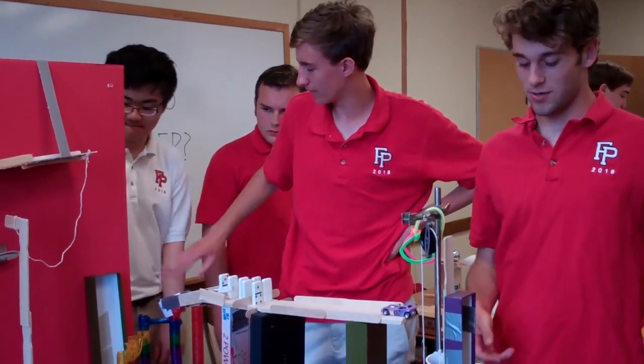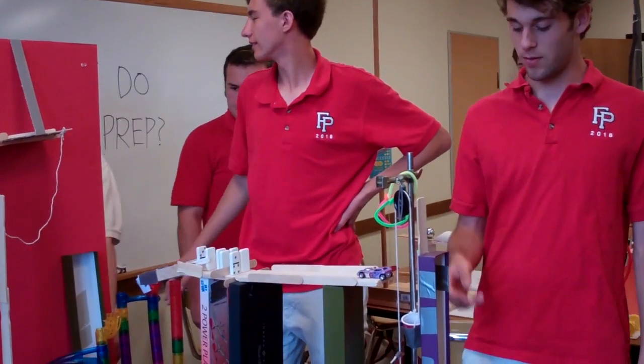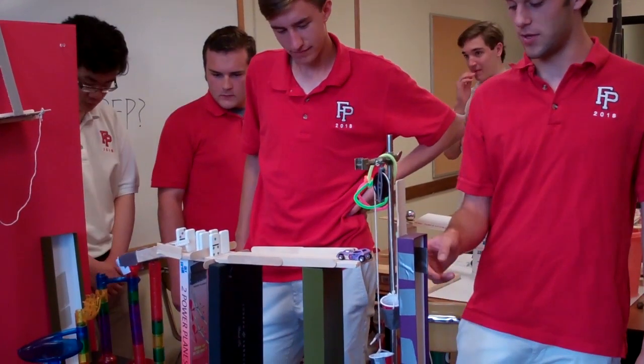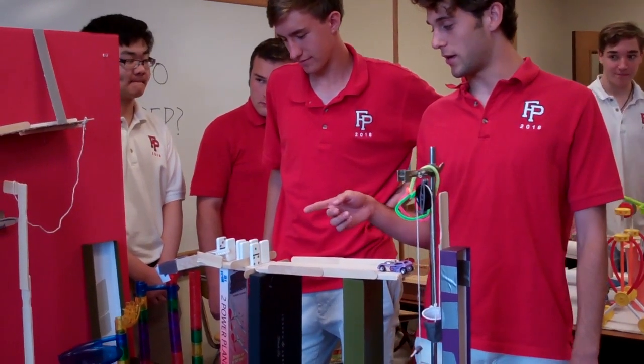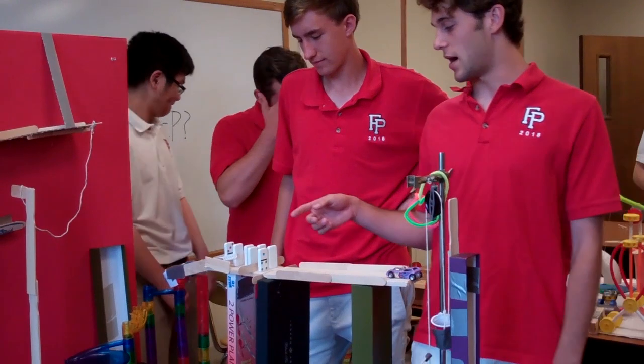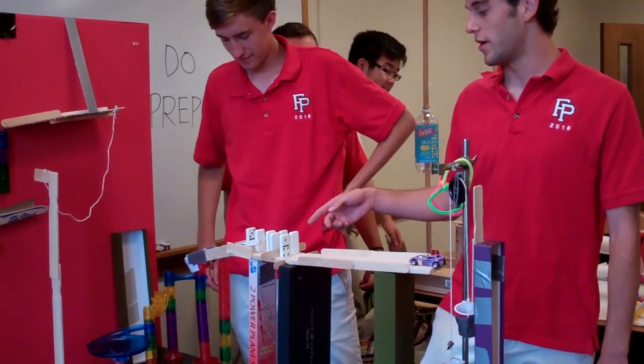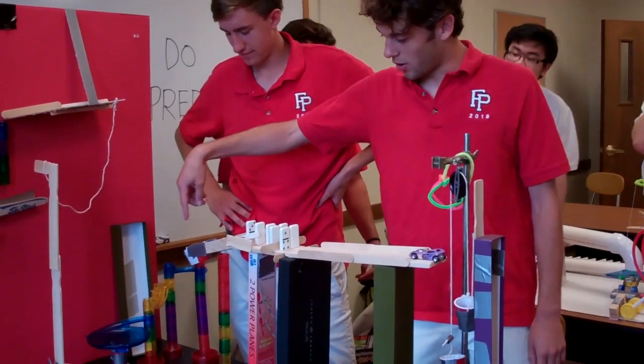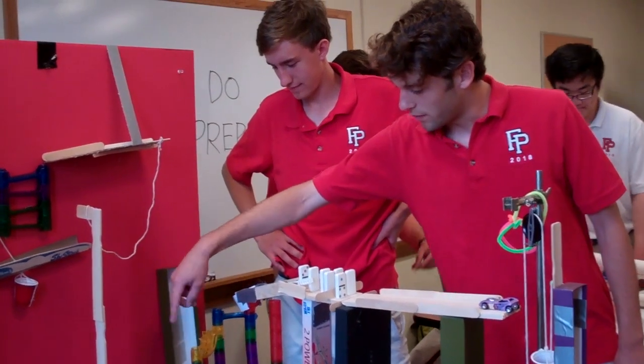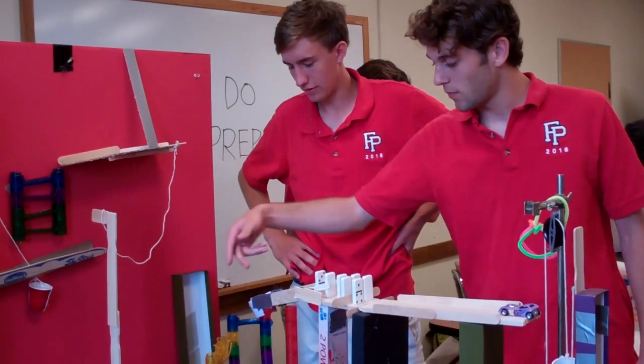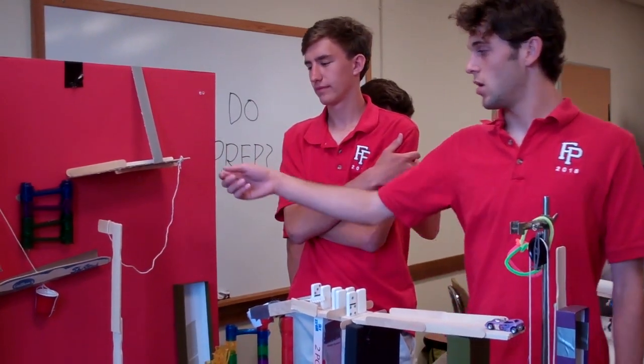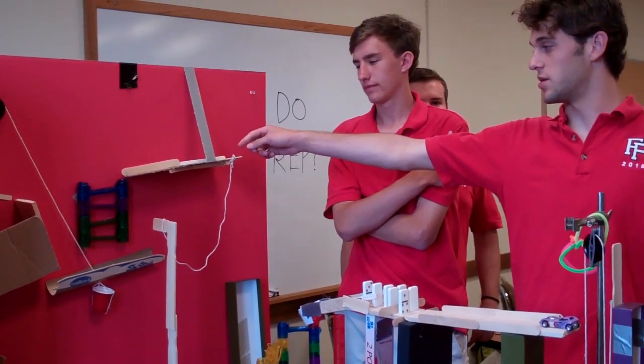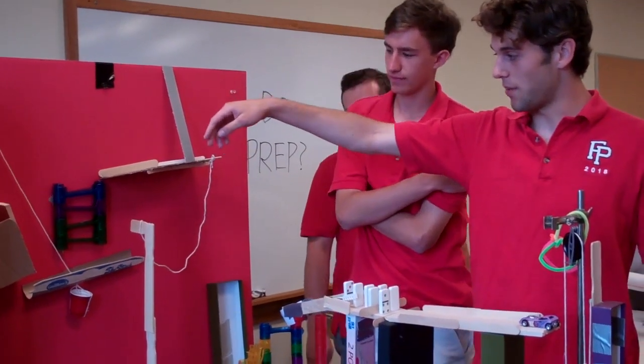So for ours, it starts off, we release the clothespin, then the pulley drops, this side goes up which hits the car, the car will roll down the incline plane, knock down the dominoes, and the dominoes knock down a marble, which go down this incline plane, go like down here through the wheel, then they go down the funnel, and when they land in the funnel, this like seesaw will push up, releasing like this stopper in front of this marble.